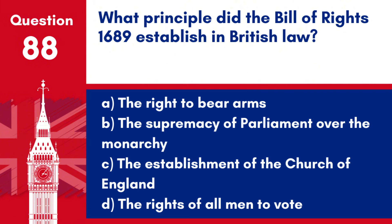Question 88. What principle did the Bill of Rights 1689 establish in British law? a. The right to bear arms. b. The supremacy of Parliament over the monarchy. c. The establishment of the Church of England. d. The rights of all men to vote.